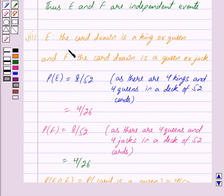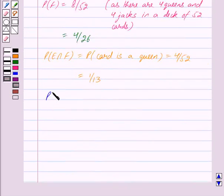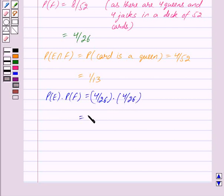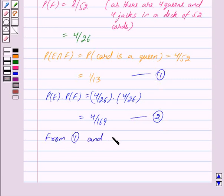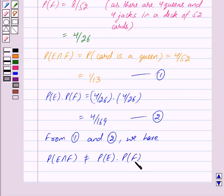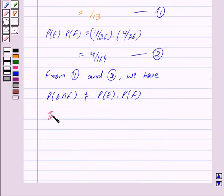E is the event the card drawn is a king or queen, and F is the event the card drawn is a queen or jack. So probability of E intersection F is probability that card drawn is a queen, equal to 1 upon 13. Probability of E into probability of F equals 4 upon 26 into 4 upon 26, which gives 4 upon 169. Since probability of E intersection F is not equal to probability of E into probability of F, by key idea the events E and F are not independent.